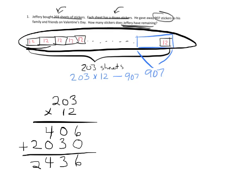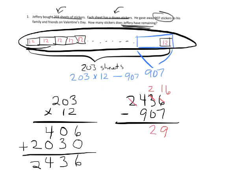Now we have to subtract 907. We need to regroup — that makes this a 16. 16 minus 7 is 9. 2 minus 0 is 2. Then 14 minus 9 is 5, with some regrouping. So that's 1,529 stickers that Jeffrey has left over.